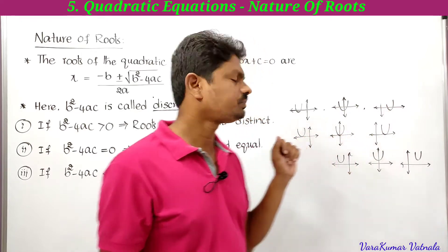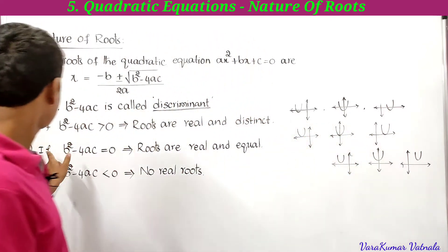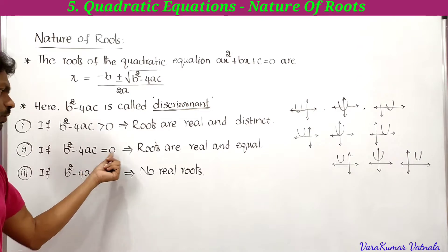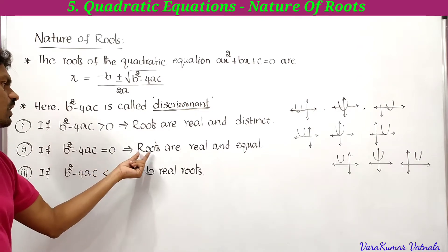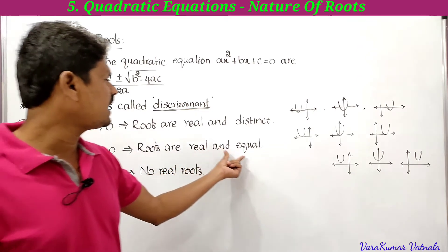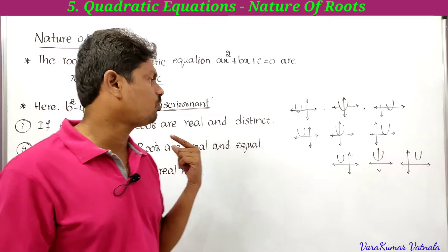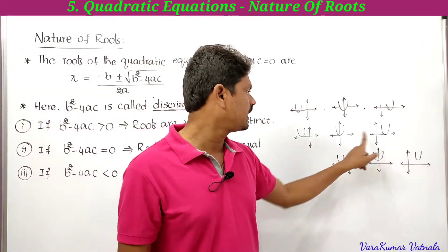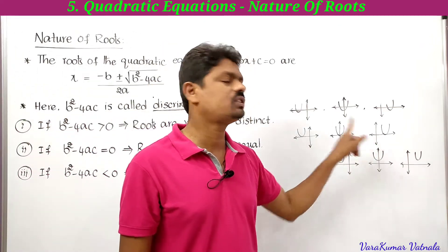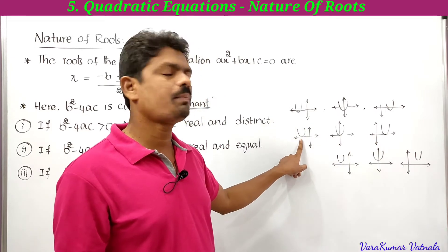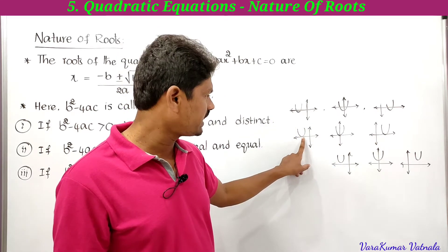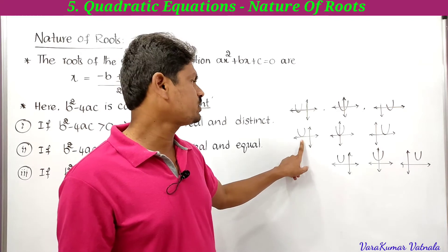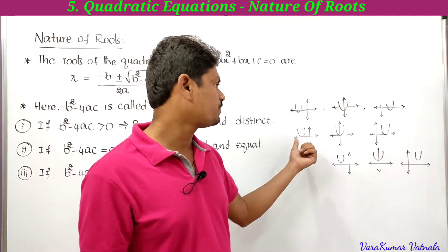If b²-4ac is equal to 0, the roots are real and equal. If we draw the graph, we get graphs where the parabola intersects the x-axis at exactly one point, and the x-coordinate of that point gives the root.